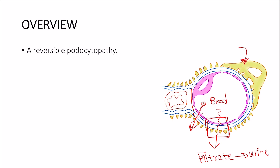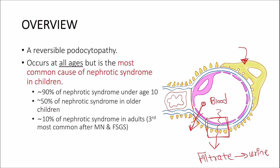Minimal change disease is a podocytopathy, or a disease of the podocyte. It is the most common cause of nephrotic syndrome in children, accounting for about 90 percent of nephrotic cases in those under the age of 10. It is seen less commonly in adults and represents the third most common cause of nephrotic syndrome in adults, after membranous nephropathy and focal segmental glomerulosclerosis.